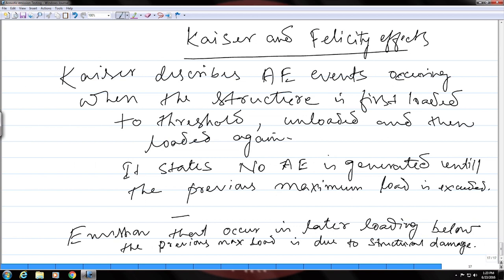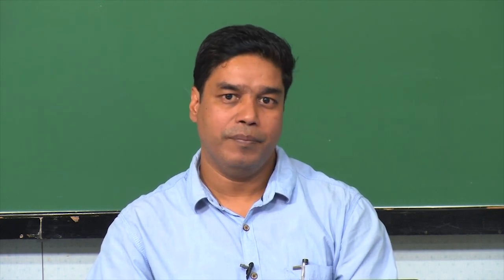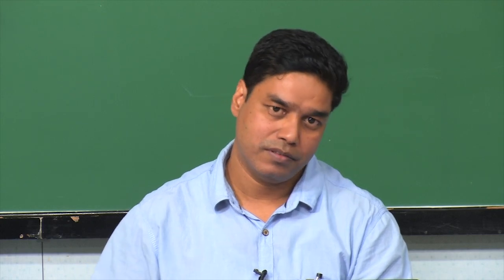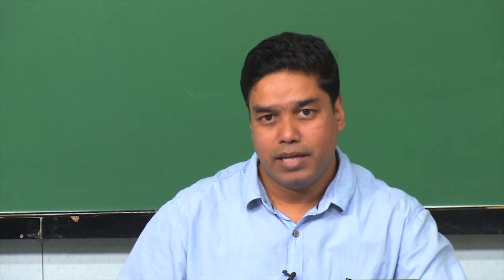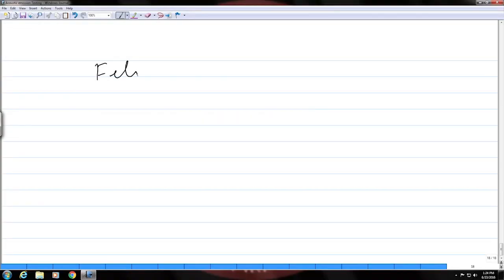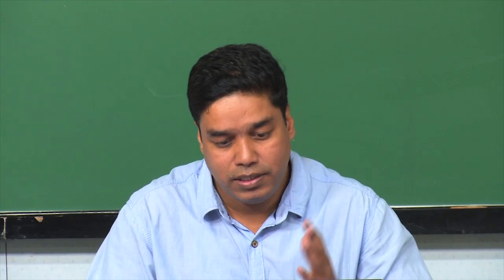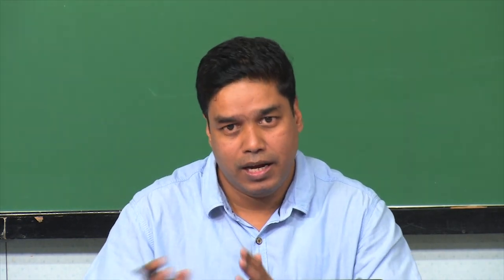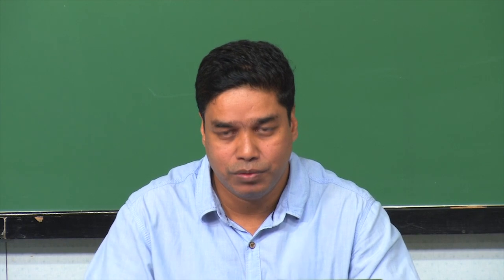This is how you understand the relationship between acoustic emission events, the loading history, and whether the structure has been damaged or whether the defects are active. The occurrence of acoustic emissions below the previous maximum load is known as the Felicity effect. So: the Kaiser effect means no emission before the previous maximum load, and the Felicity effect means emission before the previous maximum load. Kaiser effect indicates no damage; Felicity effect indicates the structure is damaged with a significant active acoustic emission source.